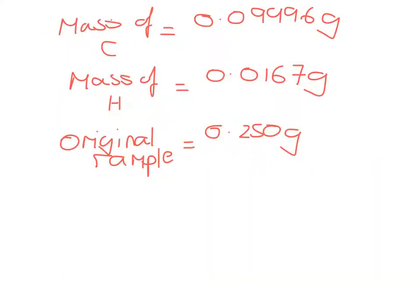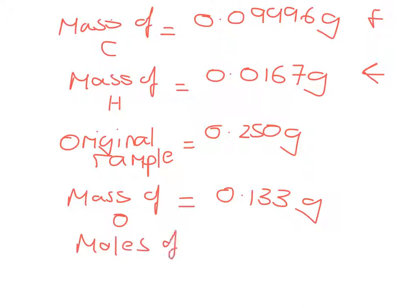So I know that I've got this mass of carbon and this mass of hydrogen. The original sample was 0.25 grams. So if I take away the mass of hydrogen and also the mass of carbon, I will find that my mass of oxygen is going to equal 0.133 grams. And so I can now find my moles of oxygen as being my mass divided by my molar mass of oxygen which is 16 to be 8.33 times 10 to the minus 3.